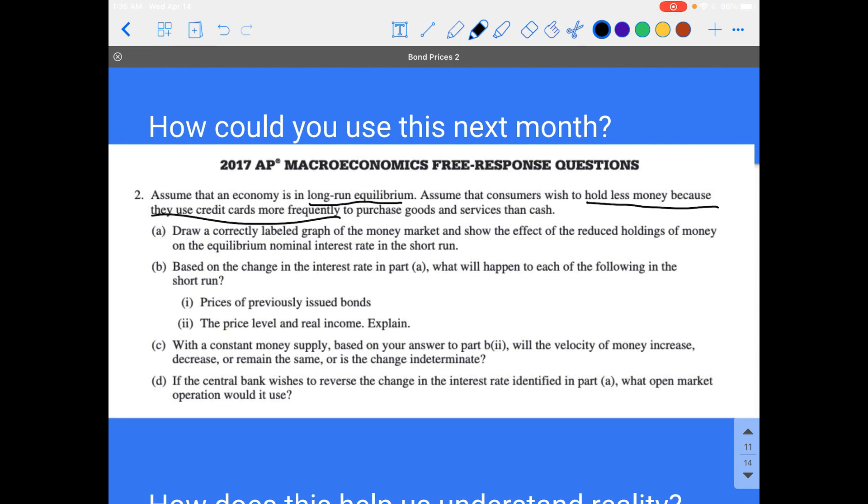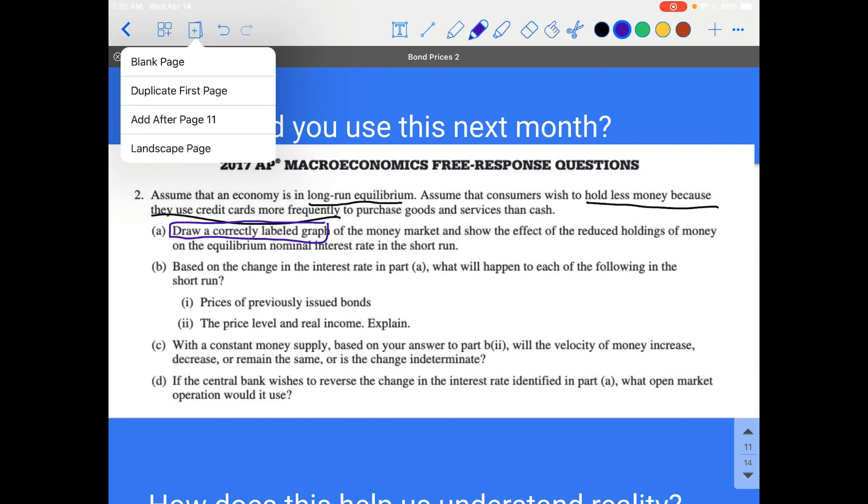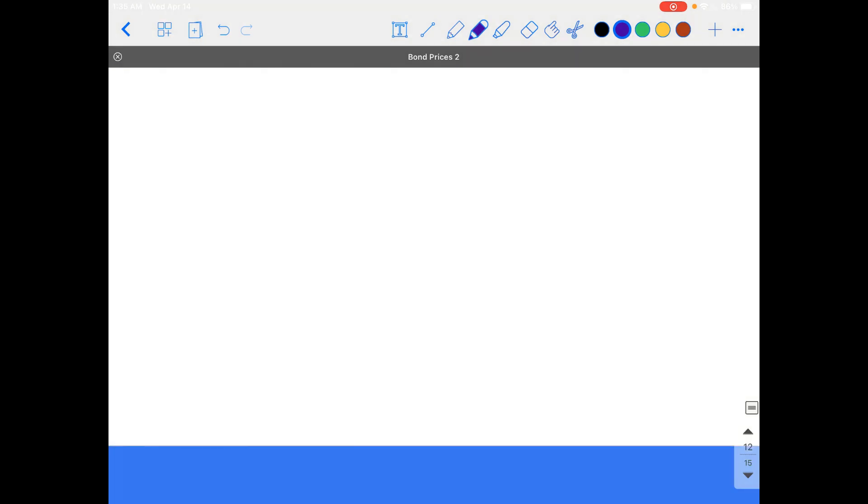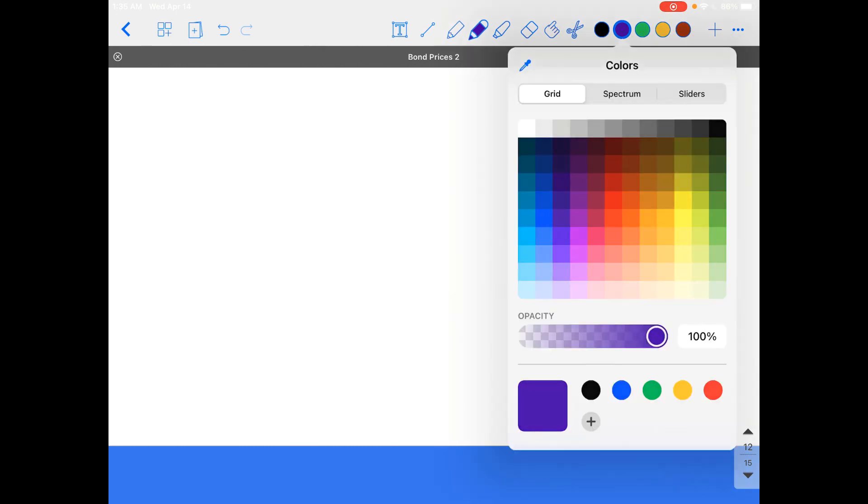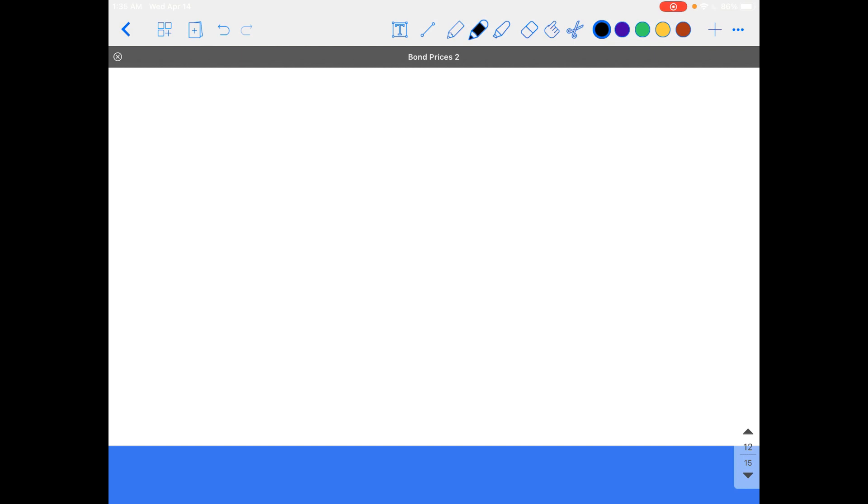We're asked in Part A to draw a correctly labeled graph of the money market and show the effect of the reduced holdings of money on the equilibrium nominal interest rate. The one thing I'll say here is that the graders do care a great deal about this part, so do not be careless. You would want to correctly label this.